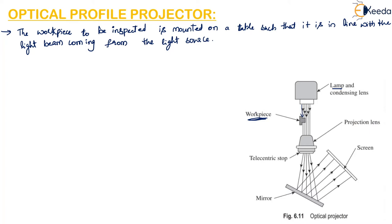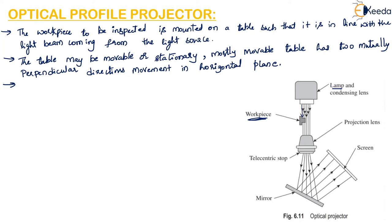Mostly this table on which the workpiece is mounted has to be movable in two mutually perpendicular directions in the horizontal plane. The light beam originating from the lamp is condensed by the condensing lens and then it falls on the workpiece. The light from the lamp passes through this condensing lens, which condenses the light beam, and then it is made to fall on the workpiece.